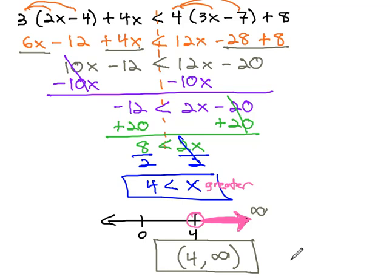In other words, any number we pick between 4 and infinity will make this original inequality a true inequality.